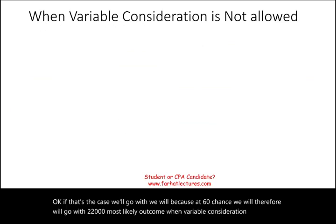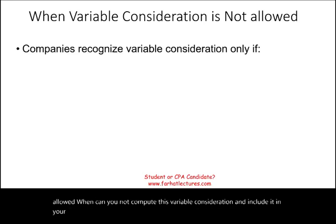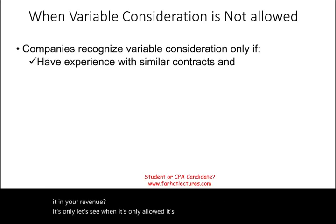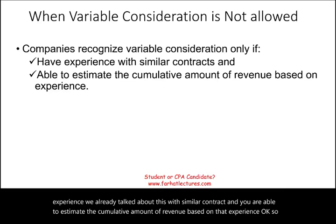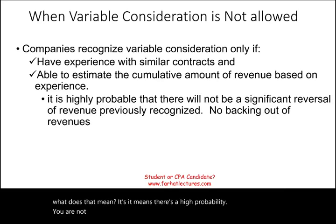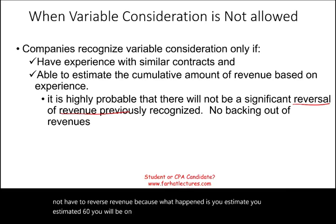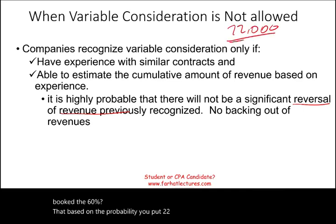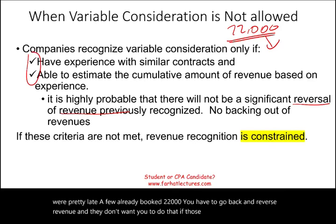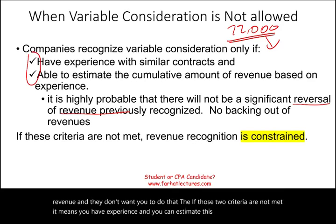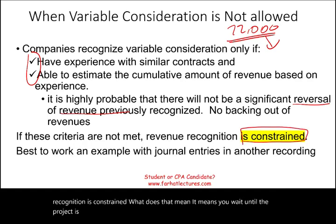When is variable consideration not allowed? It's only allowed when you have experience with similar contracts and you're able to estimate the cumulative revenue amount. This means there's a high probability you won't have to reverse revenue. If you booked $22,000 but ended up being very late, you'd need to go back and reverse that revenue — and that's undesirable. If those two criteria aren't met, revenue recognition is constrained, meaning you wait until the project is done before recognizing revenue.